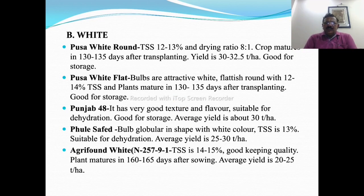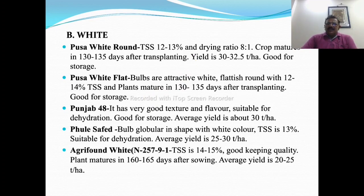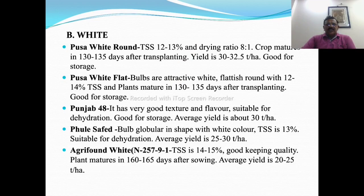White onion varieties include Pusa White Round, which has TSS of 12 to 13 percent, drying ratio 8 to 1, crop maturity 130 to 135 days after transplanting, and yield potential of 30 to 32.5 tons per hectare with good keeping quality. Pusa White Flat has attractive flat white bulbs, TSS 12 to 14 percent, plant maturity 130 to 135 days after transplanting and good storage quality.